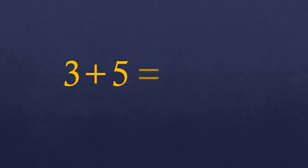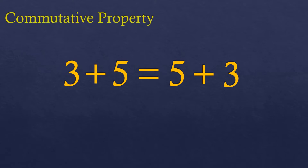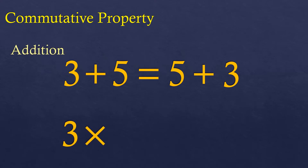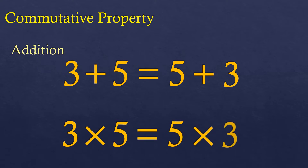So let's say we have 3 plus 5. Is it still the same if we say 5 plus 3? Yes, they are equal or the same. So it's okay to interchange the numbers as long as it's within the operation plus — that is according to the commutative property of addition. Now, how about 3 times 5? Is it okay to interchange to 5 times 3? Yes, it's the same, according to the commutative property of multiplication.